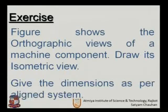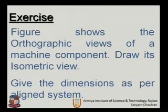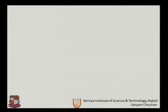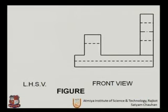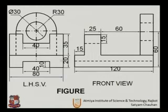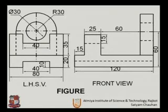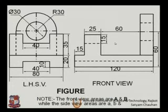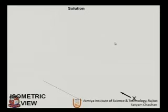Another exercise: a figure shows orthographic views of a machine component and we need to draw its isometric view. The front view is given along with the left-hand side view, giving us two views with all required dimensions including radius values.